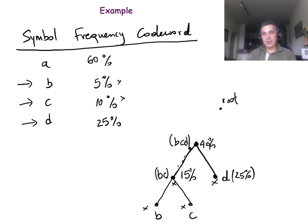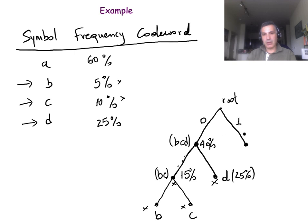The only symbols that we have at this point are symbol A with frequency 60% and symbol BCD with frequency 40%. So these two, clearly, will have to be siblings — they are both children of the root node. Without loss of generality, we can give 0 to one of them and 1 to the other. Applying the convention of 0 for the left child and 1 for the right child, at this point we have the complete binary tree.